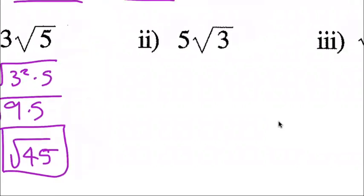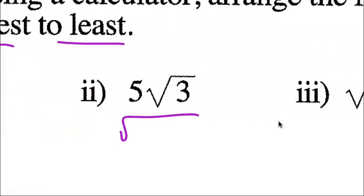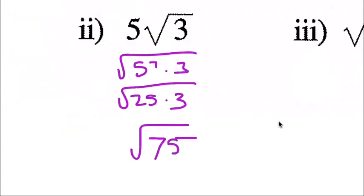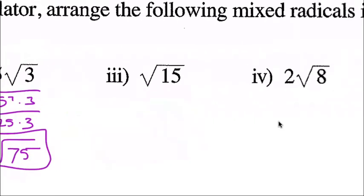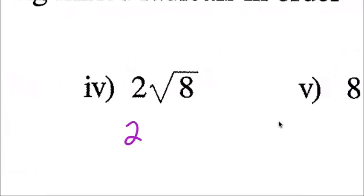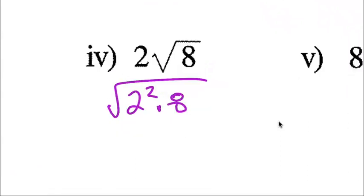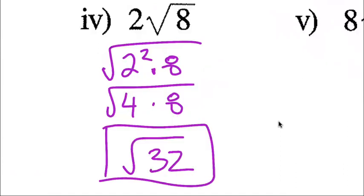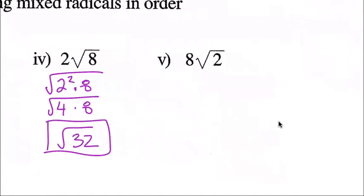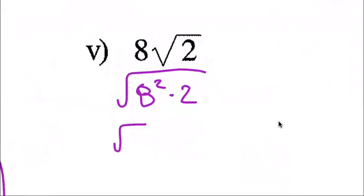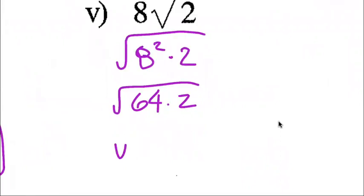Five square root three equals the square root of five squared times three, which is the square root of 25 times 3, or the square root of 75. Square root 15 is already an entire radical — I don't need to do anything with it. Two square root eight equals the square root of two squared times eight; two squared is four times eight, which is the square root of 32. Eight square root two becomes the square root of 64 times two, which is the square root of 128.